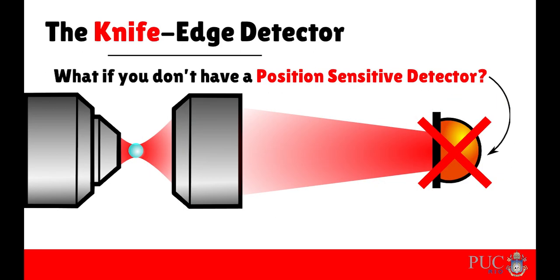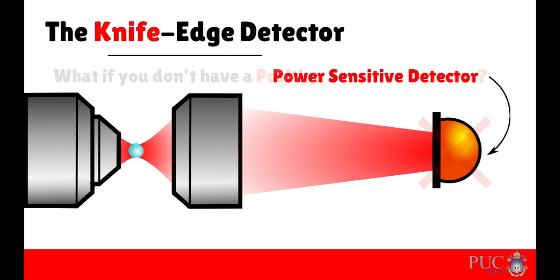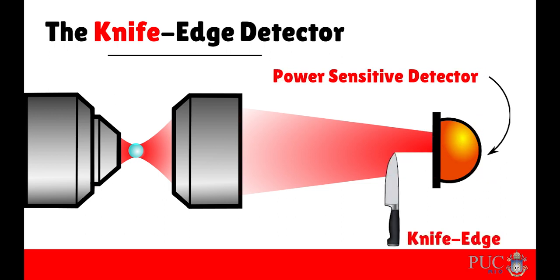Now, what if you don't have a position-sensitive detector, or for some other reason you are looking for an alternative? Then you can use a regular detector and a knife edge to block half of the beam.